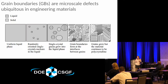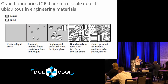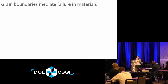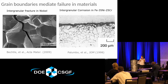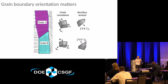Grain boundaries are incredibly important because they play a really critical role in all kinds of materials processes and properties, including the chemistry of a material and the mechanical, optical, magnetic, electrical, and thermal properties. Of particular importance is the fact that they're really critical in materials failure — specifically, they can often be the source and propagating path of things like cracking as well as corrosion.